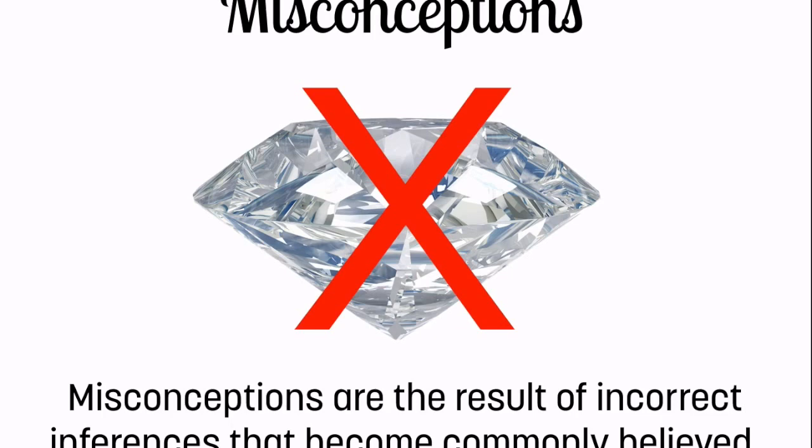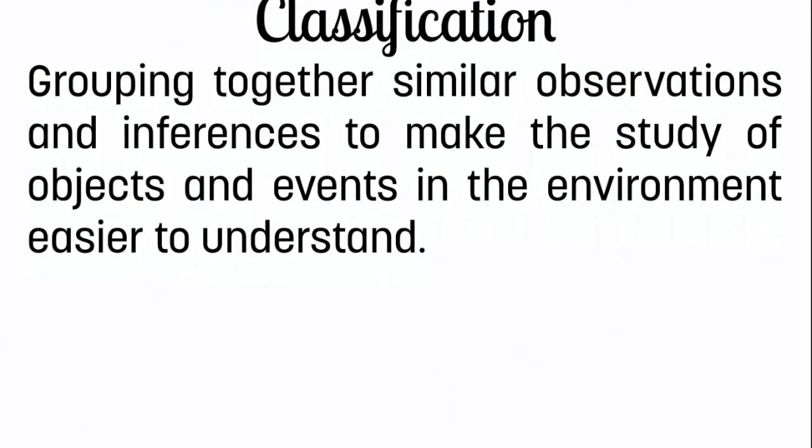Another science skill: classification. You do this all the time. That's grouping together similar observations and inferences to make the study of objects and events in the environment easier to understand. It's when we take things that are similar and we put them together, or things that are different and we move them apart.